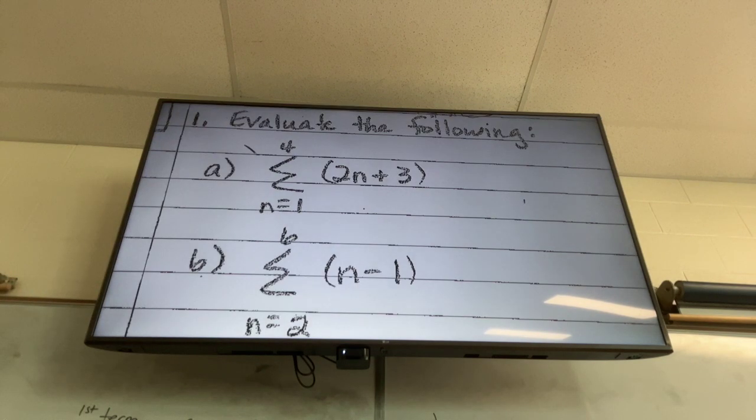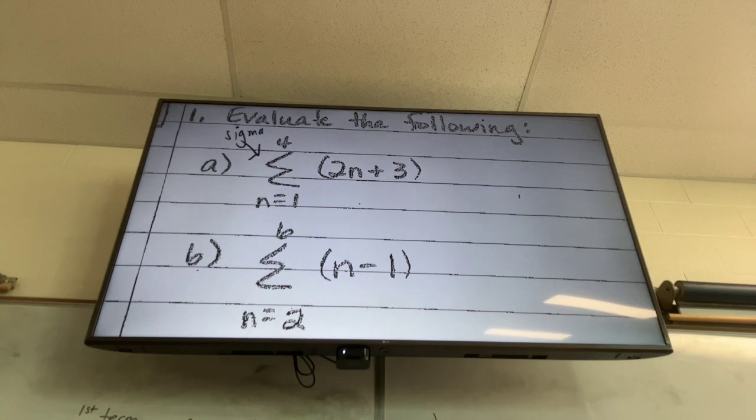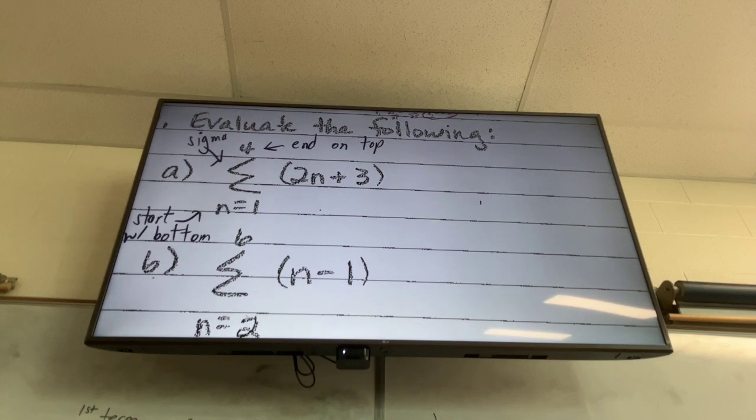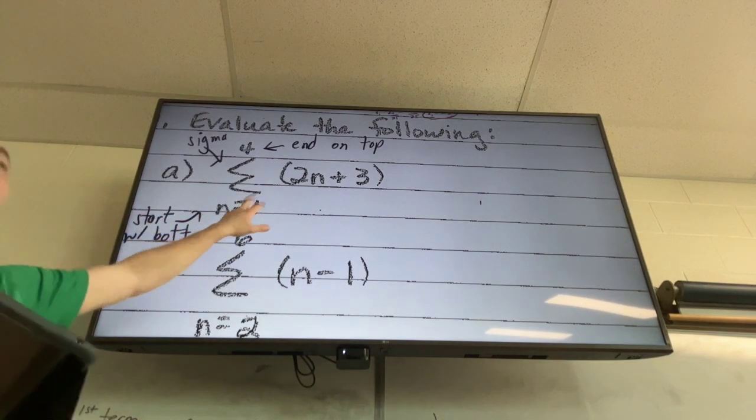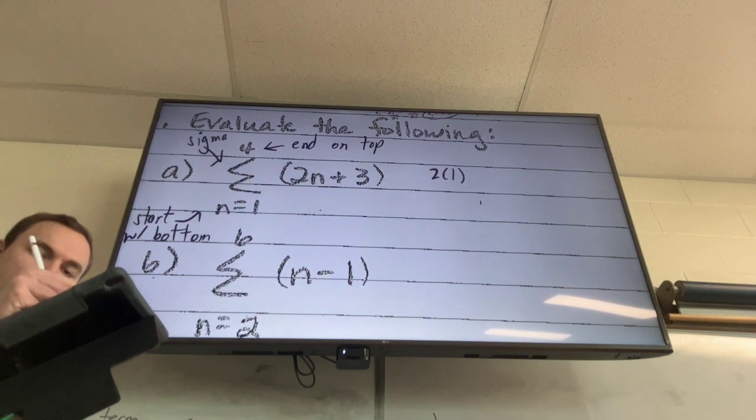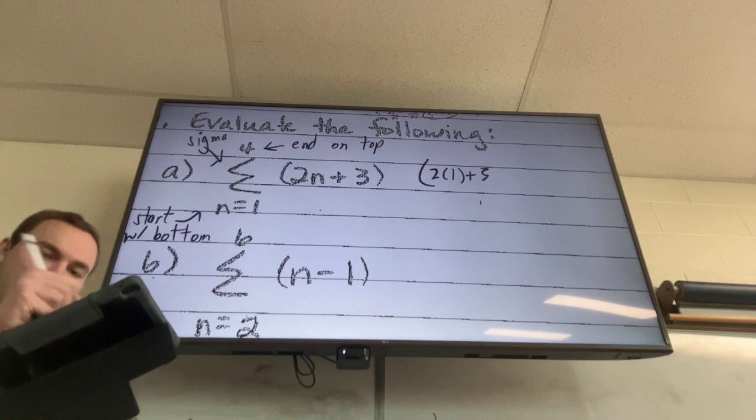So start with the bottom. Start with the bottom number, start from the bottom, end with the top. So what I do is, what this symbol here tells me to do, I've got a 1 on the bottom. So I plug in a 1 for n. So I do 2 times 1 plus 3. So I have that term.